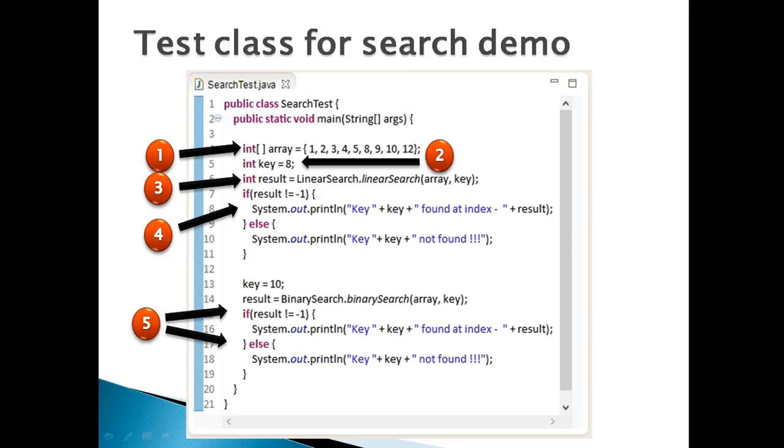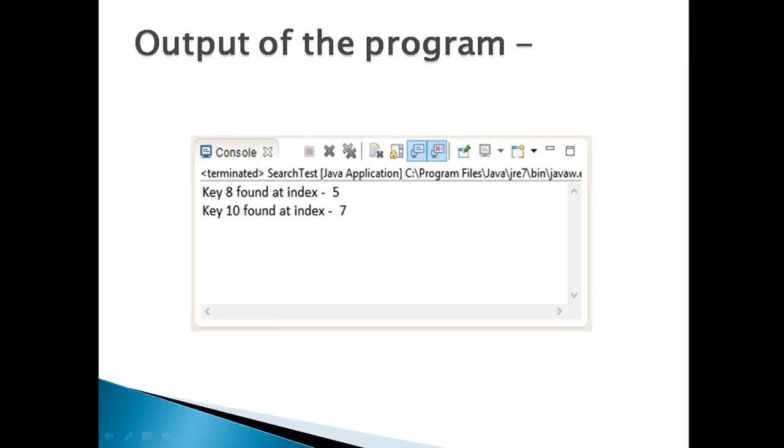Let's move ahead and run the program. In the search test class, we have created an array with few elements such as 1, 2, 3, 4, 5, 8, 9, 10, 12. We take two keys 8 and 10, which are present in the array. One key is used to demonstrate linear search, and other used to demonstrate binary search. Both the methods output as: key 8 found at index 5, key 10 found at index 7.